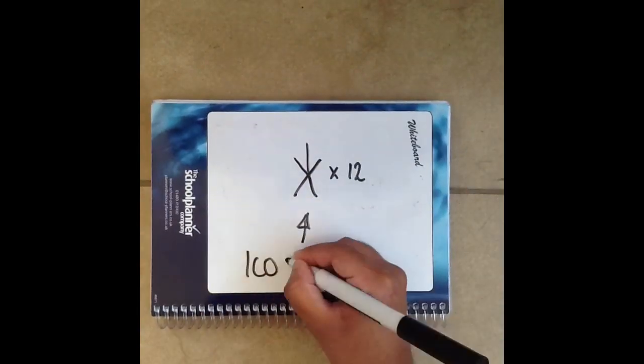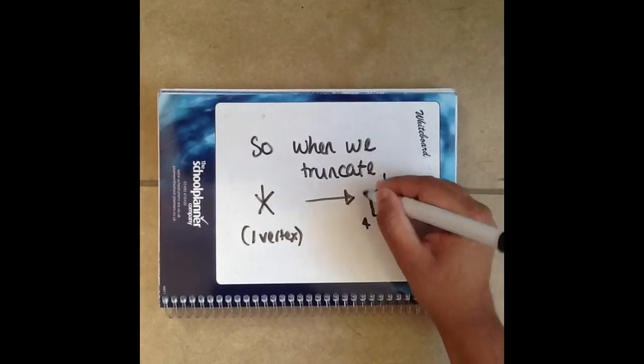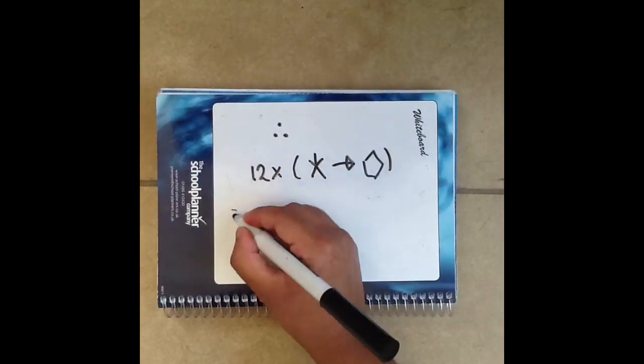And the vertices? Well there are 12 vertices on the icosahedron so when you truncate it, one vertex gives you 5 vertices so that gives you 60 vertices.